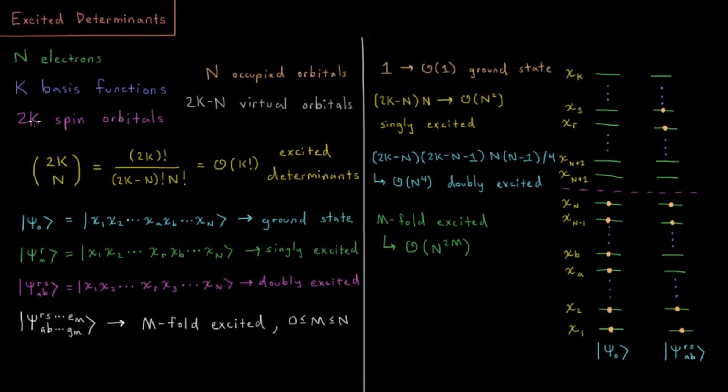So in that case, if we have 2k spin orbitals and n of them are occupied, then 2k minus n of them are going to be unoccupied or virtual.